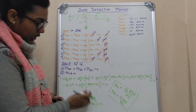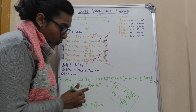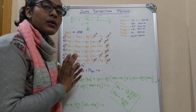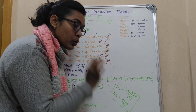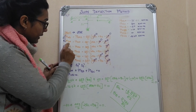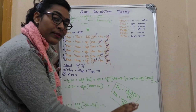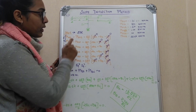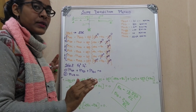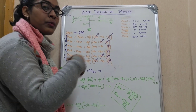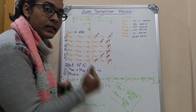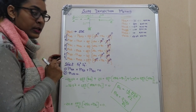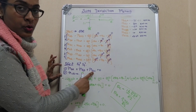Students get afraid if their answers are not matching with the book answers — don't worry. Do your question until the end: identify all the moments and move forward. First, the equilibrium condition has to be fulfilled at the end, and that will confirm your answer is correct.